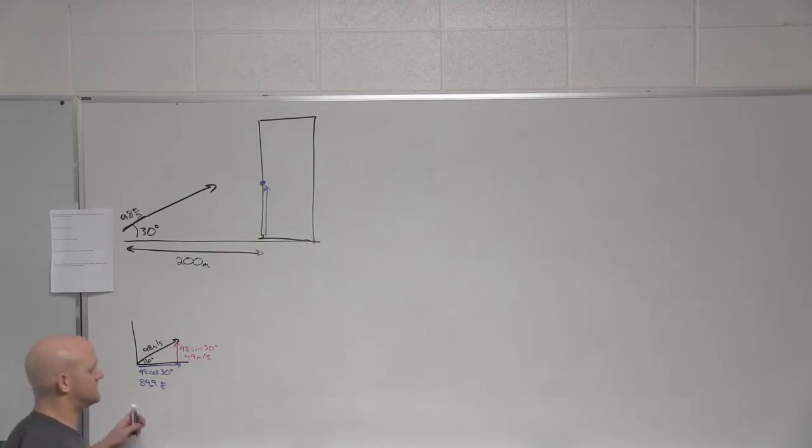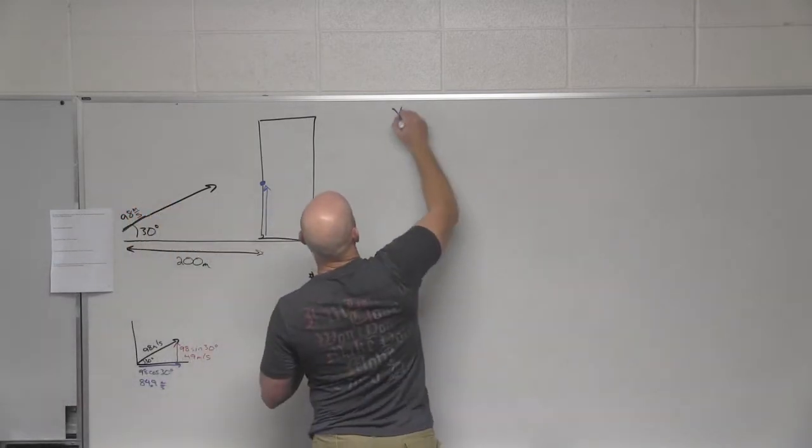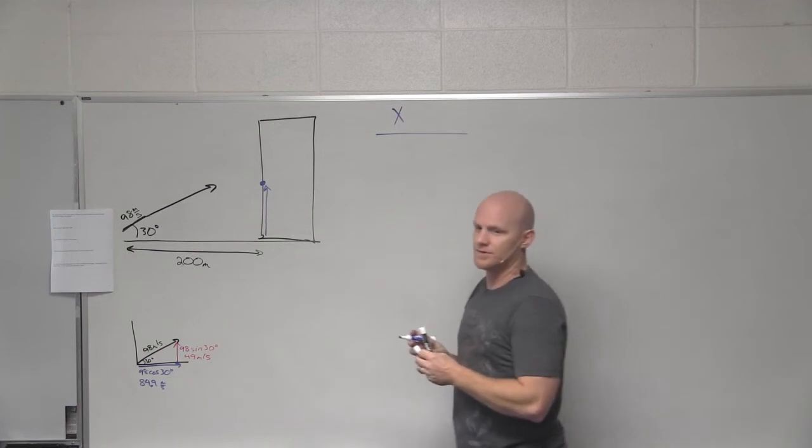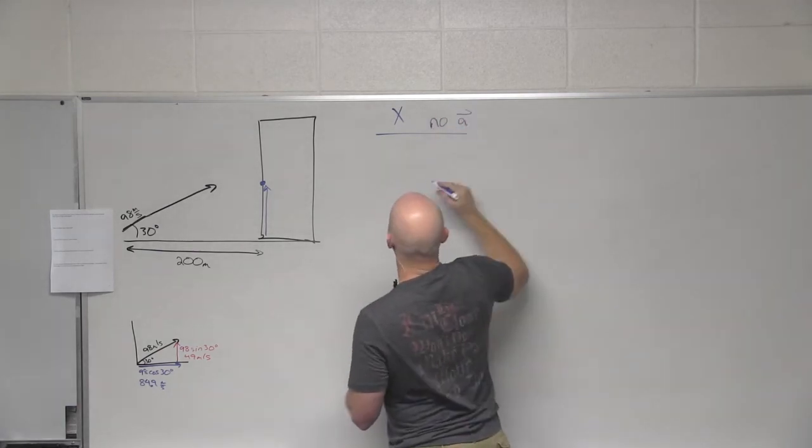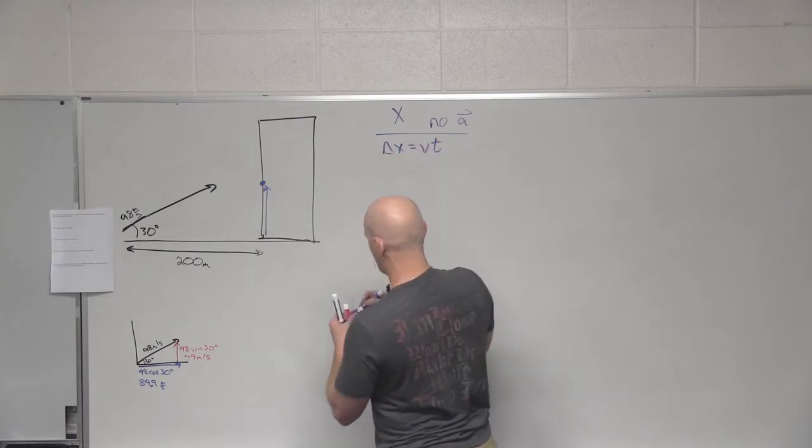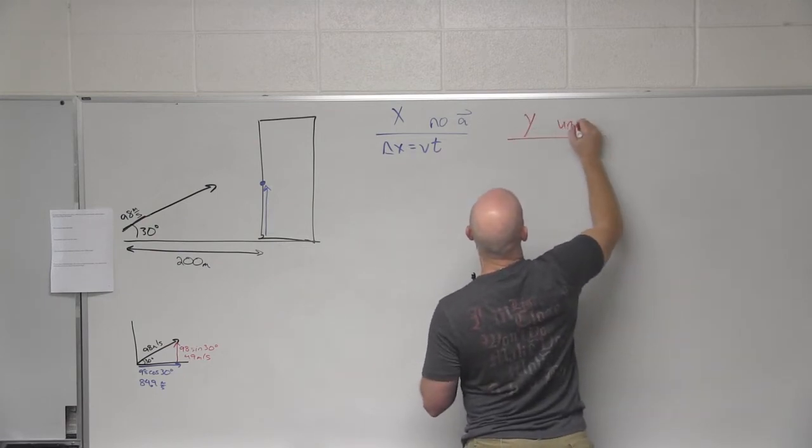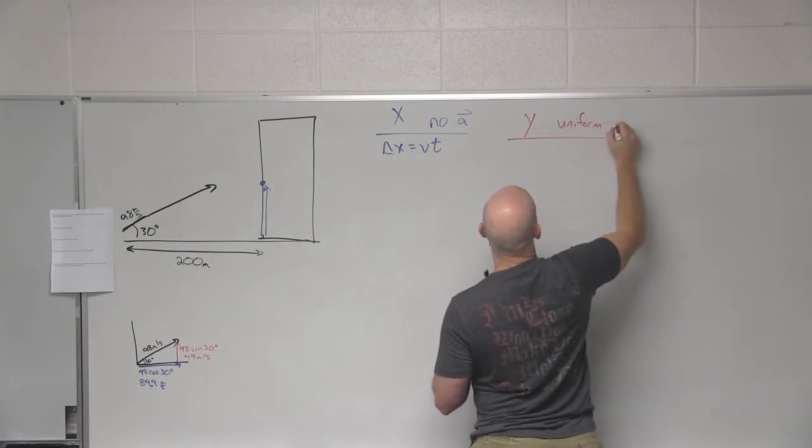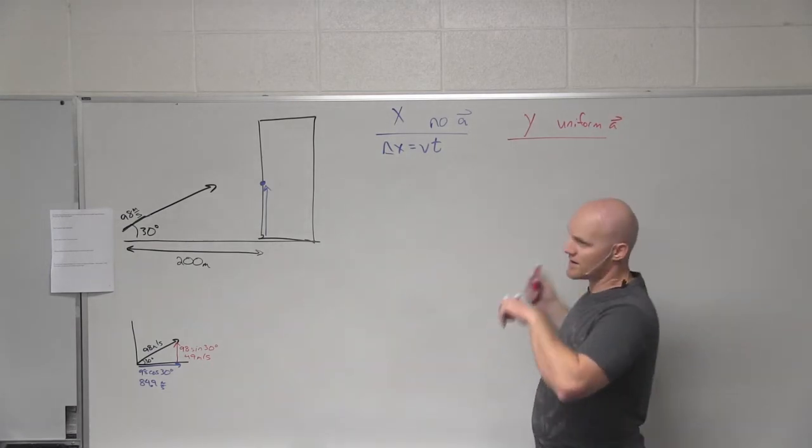In this case, let's look at the x and let's look at the y. In the x direction, acceleration, yes or no? Nope. No acceleration. What's the only equation we got? Delta x equals vt. In the y direction, acceleration, yes or no? Yeah, we got uniform acceleration due to gravity. Great. So we got a whole host of equations we might use.